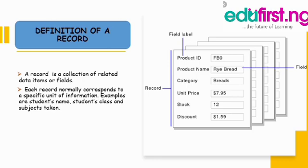Now let's go to a record. A record is a collection of related data items or fields, specific units of information. For example, a student's name, student class, and subject taken. My record would include my name, my date of birth, my state of origin, subjects I take, and my school — that's a record of a particular student.